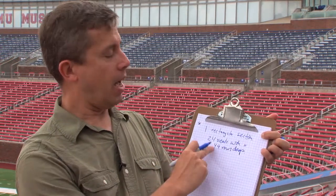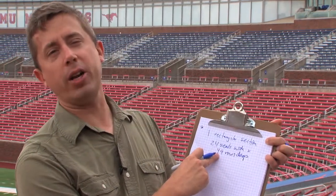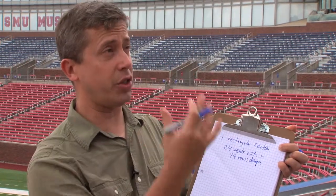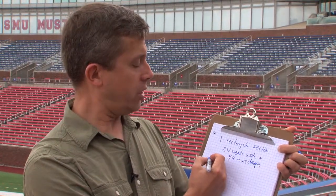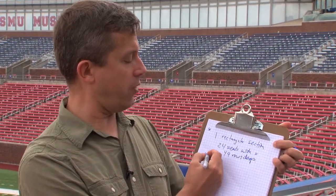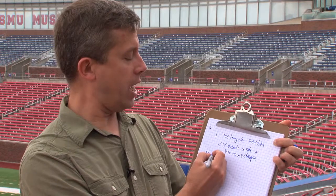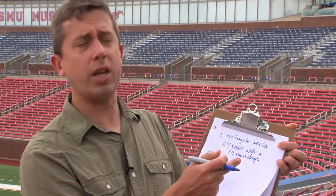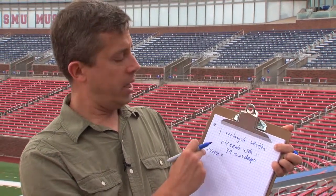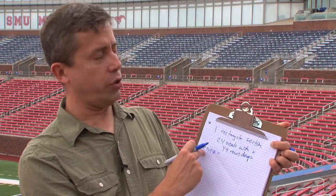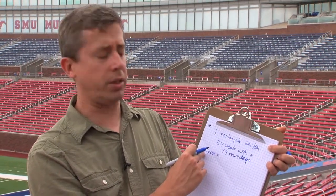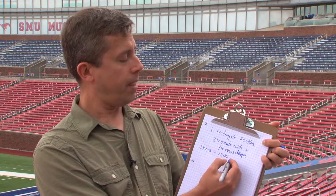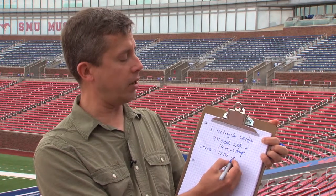Since I'm just estimating, I'm going to round that 49 off to 50. I wasn't even sure if my count was exact. So that's 24 times 50. 2 times 50 would be 100, and there's 12 twos in 24 — it's two dozen. So that's 1,200 seats in a rectangular section.